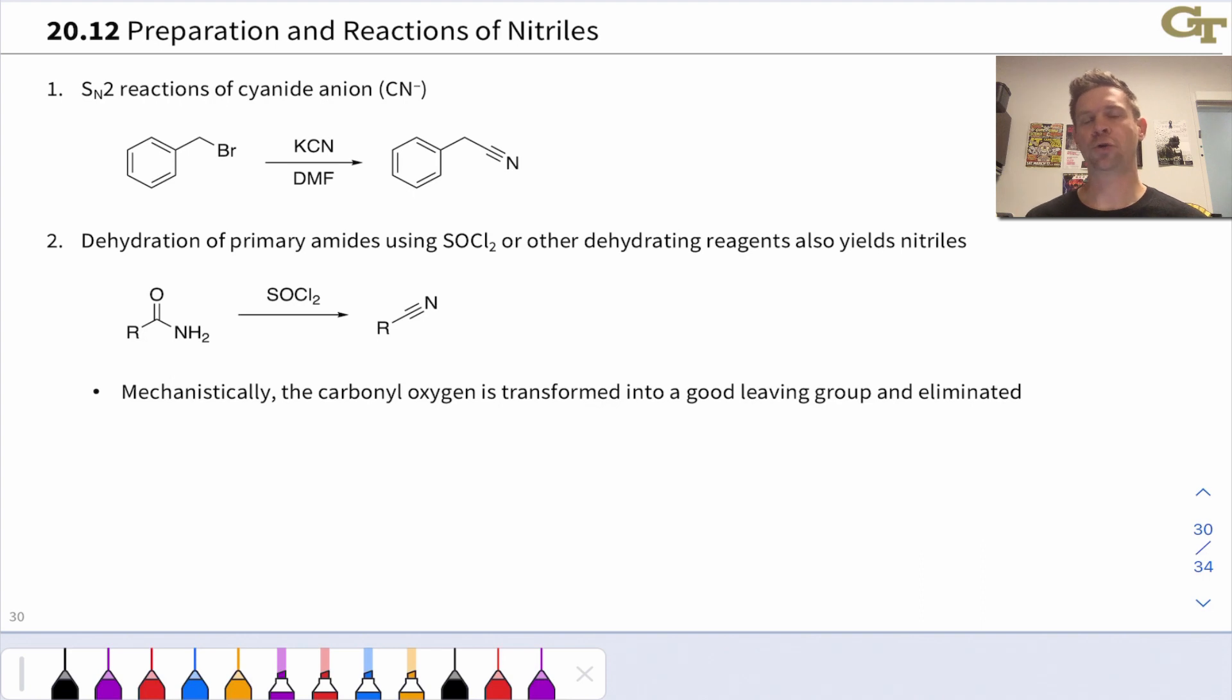Nitriles contain the cyano functional group linked to a carbon, and so they have the general structure RCN, and this carbon is in the plus three oxidation state, making nitriles kind of an honorary member of the carboxylic acid derivatives. They don't have a direct leaving group connected to the cyano carbon, but in many ways they are highly analogous to the carboxylic acid derivatives we've already seen. This carbon will react with nucleophiles, for example, in nucleophilic addition processes.